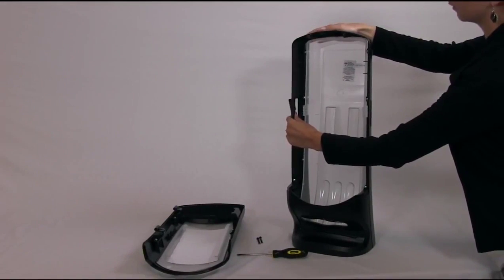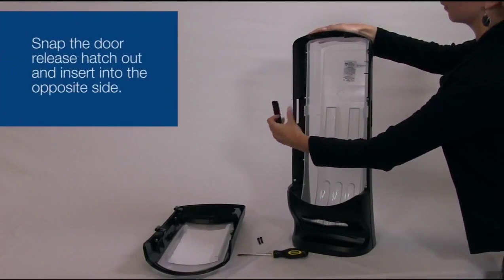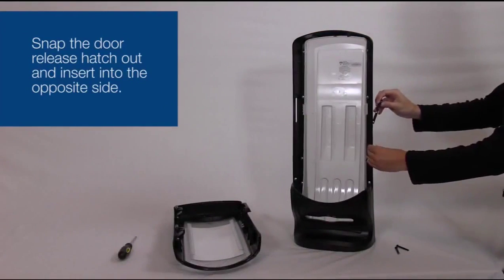Next, pop the door release hatch out of the left side of the dispenser and snap it into the opening on the right side.